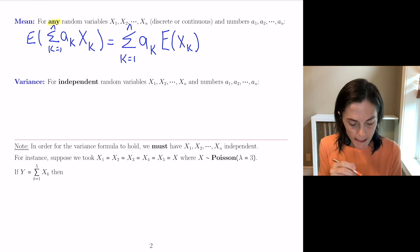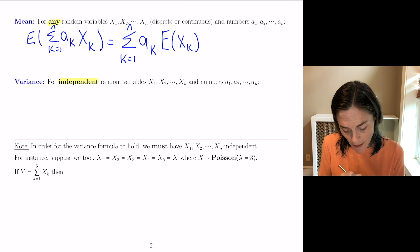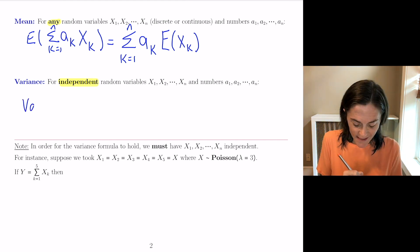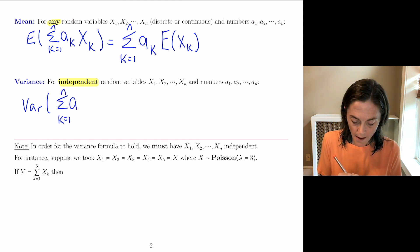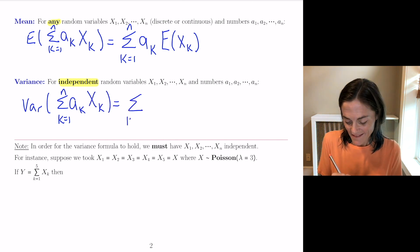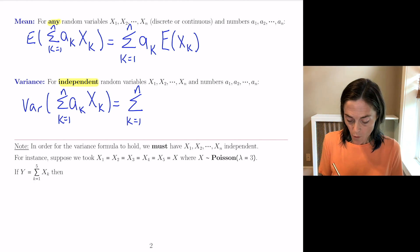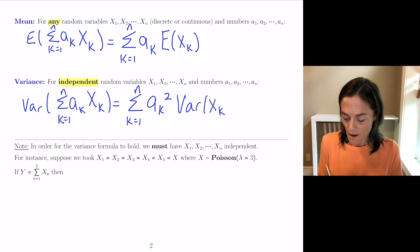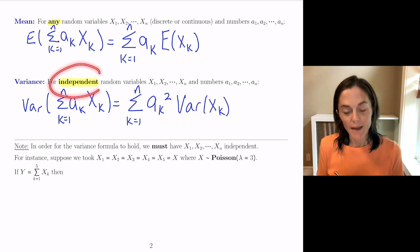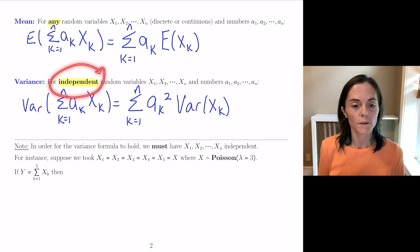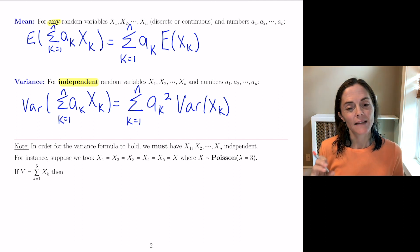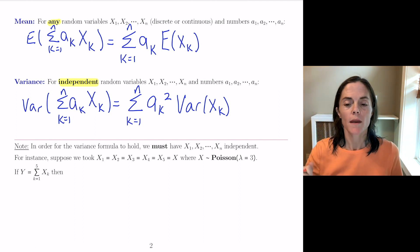When we go to talk about variance, there is a requirement of independence. If the variables are independent, then the variance of the sum, k equals 1 to n of ak·Xk, equals the sum of ak squared times the variance of Xk — very close to the formula we saw when n equals 1. But this independence requirement is required for this formula to hold.